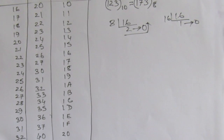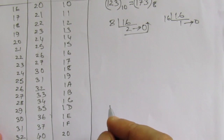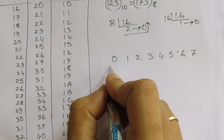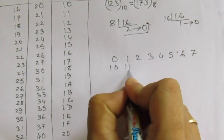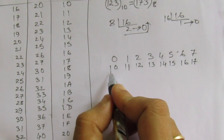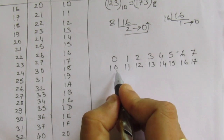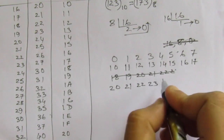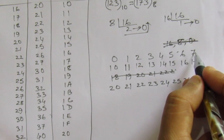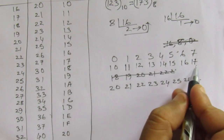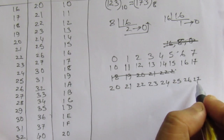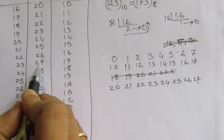Now I will show you a shortcut. In the case of octal numbers, we have 8 digits from 0 to 7. For 8, we write 10; for 9, 11; then 12, 13, 14, 15, 16, 17. Then 20, 21, 22, 23, 24, 25, 26, 27. So, 23 in decimal is 27 in octal, and you can verify this against the table.